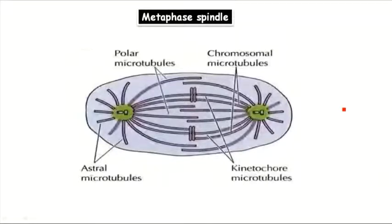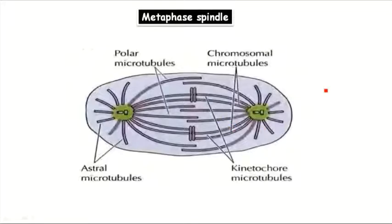The plus-end motor protein does the opposite — it directs the movement of the chromosome in the opposite direction, away from the spindle poles. The minus-end directs movement towards the spindle pole, while the plus-end directs movement away from the spindle pole. In pro-metaphase, the chromosome moves back and forth between the centrosome and the center of the spindle until it aligns properly to the metaphase plane.